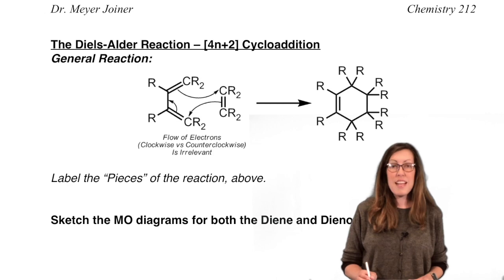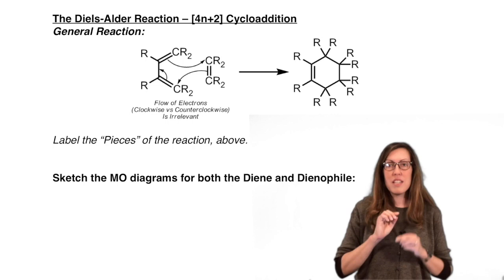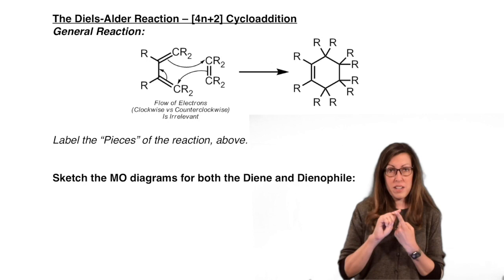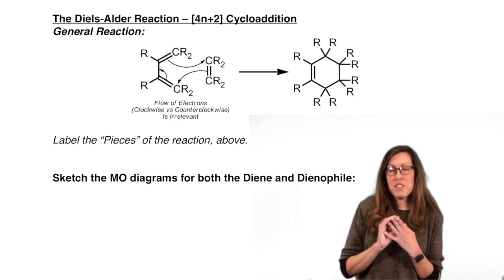Today we are going to talk about a very important reaction: the Diels-Alder reaction. It's so important that this entire lecture is going to be covering only that one reaction. As usual with reactions, we always go through the stereoselectivity and regioselectivity, but before we get to that we need to understand the driving force, so we're going to be doing some orbital diagrams. We're going to dive deep into this reaction that actually looks deceptively simple.